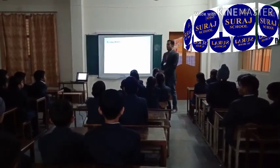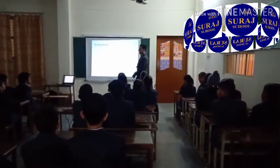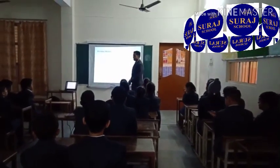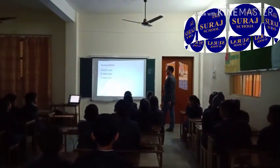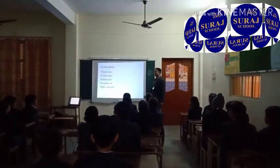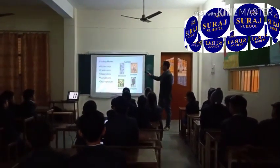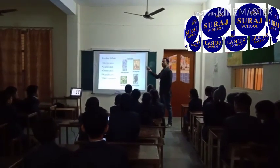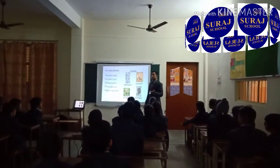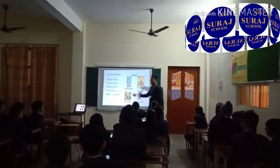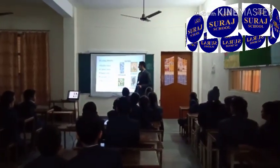Next topic is feeding. According to feeding, we have divided the animals into different parts. For example, herbivorous eat plants, carnivorous eat other animals, omnivorous eat both, scavengers, and decomposers. Herbivorous eat plants.